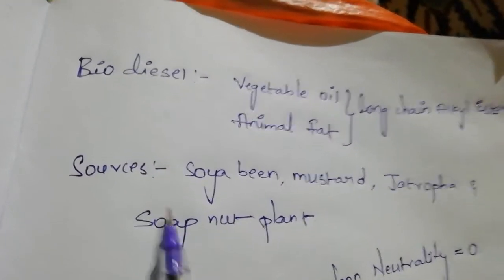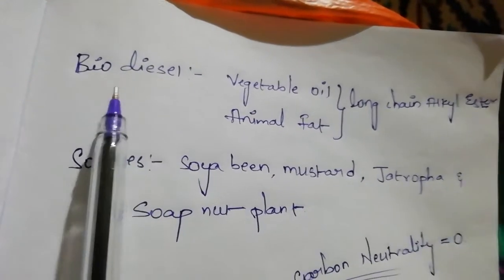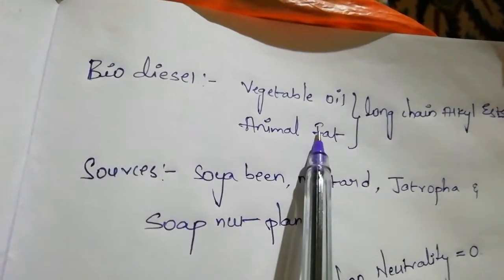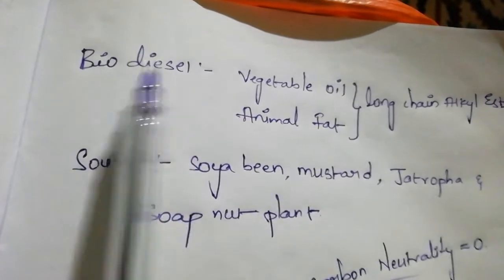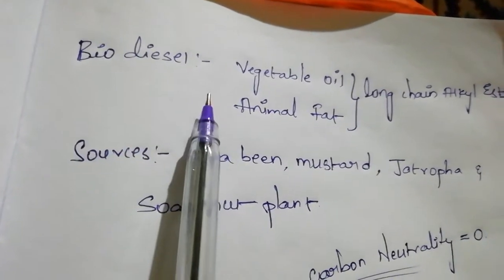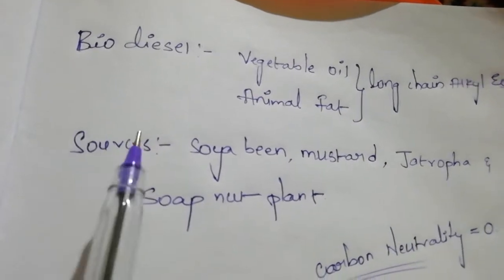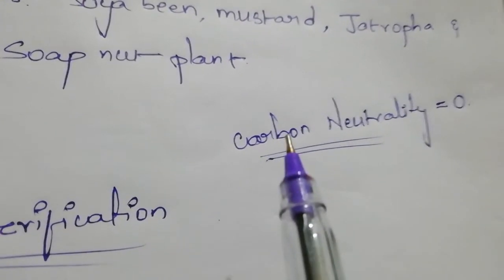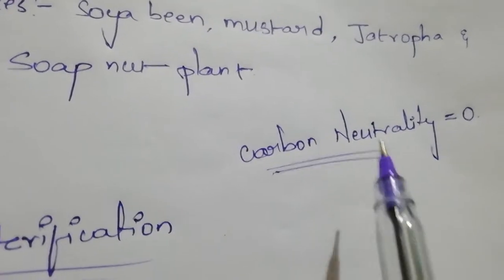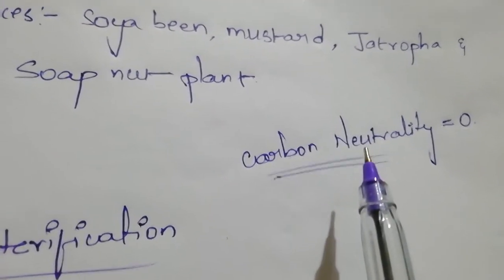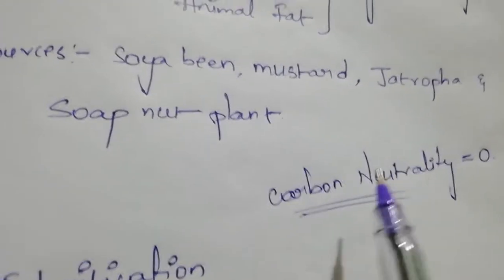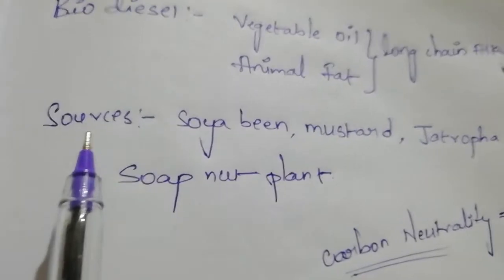Today's topic is biodiesel. Biodiesel is made up of vegetable oil and animal fat. By using biodiesel, pollution will not be generated — its carbon neutrality is zero. The carbon dioxide produced is consumed by plants, which is why we call it carbon neutral.